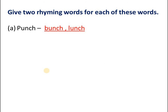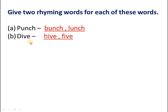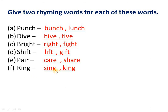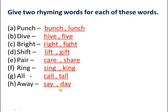Now you have to give two rhyming words for each of these words. For punch: bunch, lunch. For dive: hive, fire. For bright: ride, fight. For sift: lift, gift. For pair: care, share. For ring: sing, king. For all: call, tall. For away: say, day. So these were all the rhyming words.